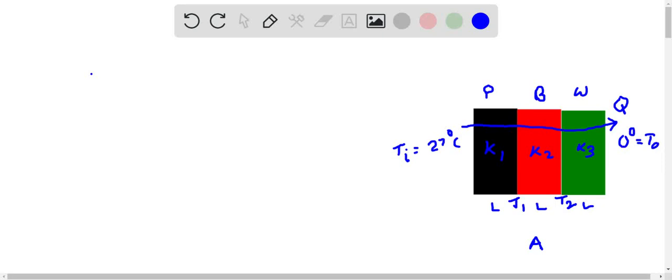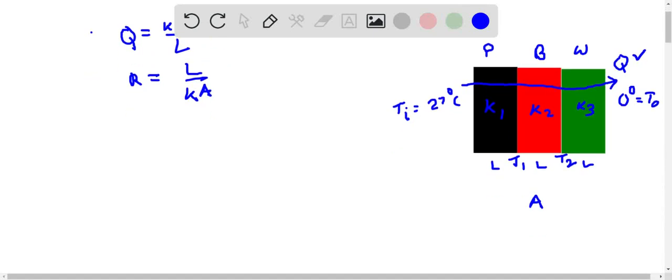First, we will figure out the resistance offered by each material. Let me give you a quick introduction to the expression of heat transfer: Q = kA/L times ΔT. The resistance is given as R = L/k. The heat Q is constant passing through all of them, so we can say that all these materials are in series. For series combination, we have equivalent resistance Re = R1 + R2 + R3.